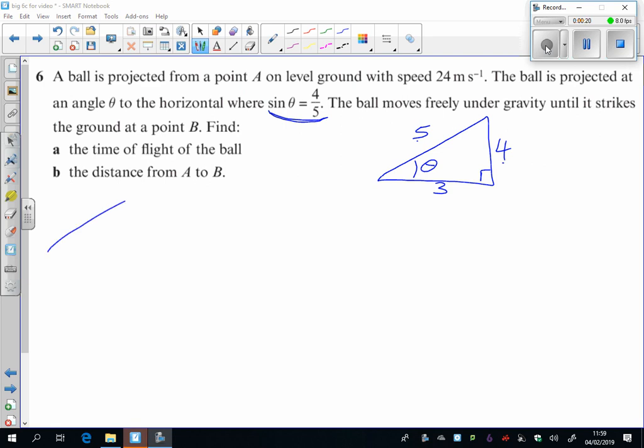So when I start going at 24 metres per second, at the angle theta here, over here I've got 24 sine theta, and over here I've got 24 cos theta.